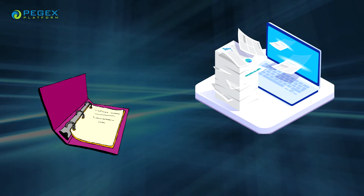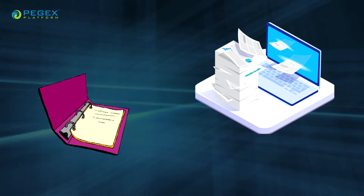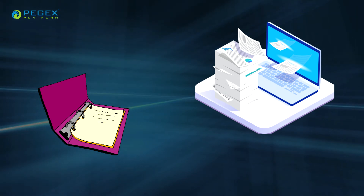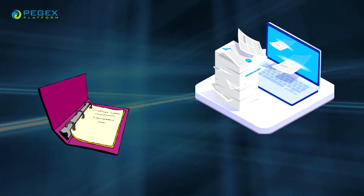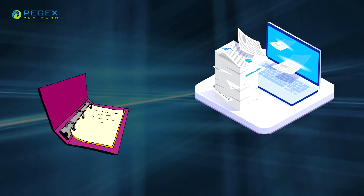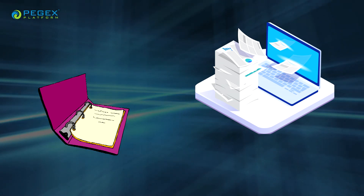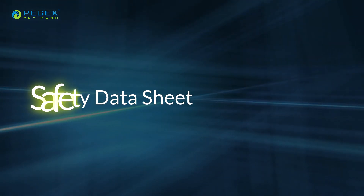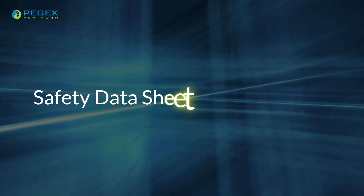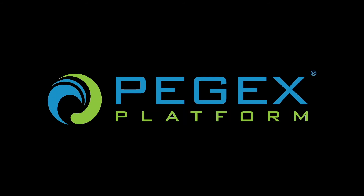When a waste generator needs to store or move waste from their site to another site or to a Treatment, Storage, and Disposal Facility, a waste profile detailing the specifics about the waste is needed. The SDS contains critical information to begin the process of compiling the waste profile. The PegEx platform enables you to search for and attach the most recent version of the SDS to the waste profile.